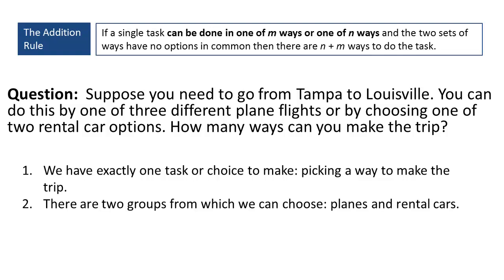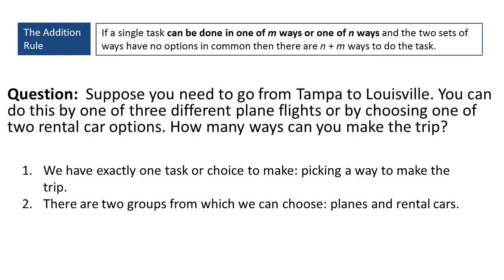Second, there are two groups from which we can make our choice: we can choose either planes or rental cars. That's the second part of the addition rule. And third, none of the options in the first category — the plane choices — is also in the second category, the car choices. Because all of those requirements have been met, we can use the addition rule. With three options in the first group (plane flights) and two in the second group (rental cars), the addition rule tells us the total number of travel options is 3 plus 2, or 5.